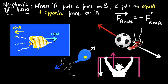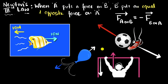Rockets also work on a very similar principle. The rocket puts a lot of force on the hot gases that come out, and the gases put an equal and opposite force back on the rocket itself, making the rocket accelerate upwards. Of course, there's a lot more going on when it comes to rockets.